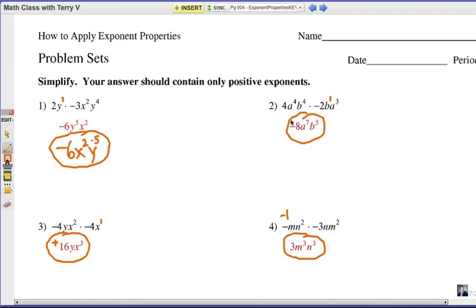For number two, we have four times negative two, that would be negative eight. And a to the fourth times a to the third would be a to the seventh. Add those exponents, remember? And b to the fourth times b to the first would be b to the fifth. That's a common mistake right there. Don't forget that a single variable has a one as an exponent.